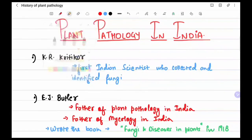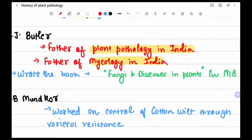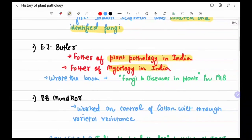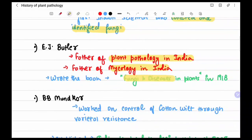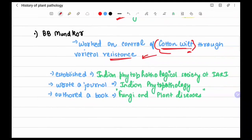For plant pathology in India: K.R. Kirtikar was the first Indian scientist to collect and identify fungi in India. E.J. Butler is the father of plant pathology in India and also the father of mycology in India; he wrote the book 'Fungi and Diseases in Plants.' B.B. Mundkur worked on controlling cotton wilt through varietal resistance, established the Indian Phytopathological Society at IARI, and authored the book 'Fungi in Plant Diseases.'